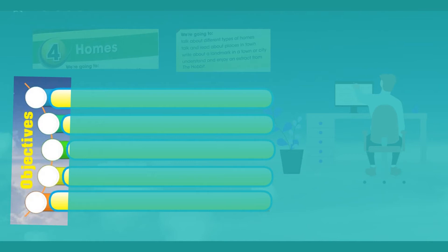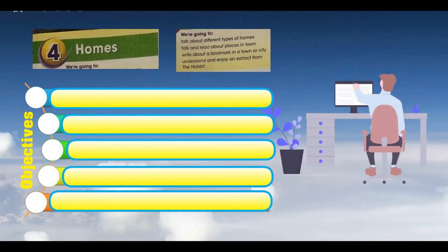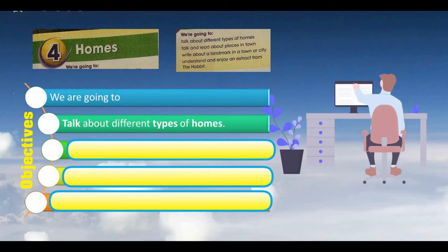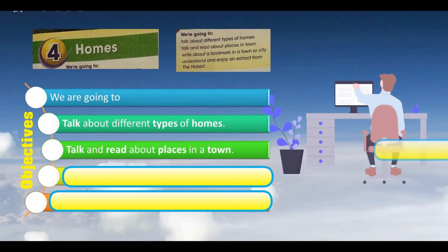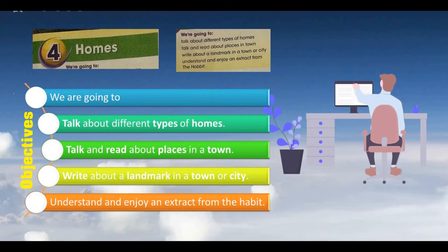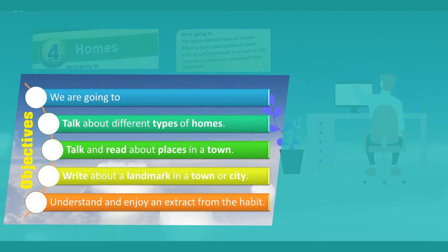Do you know what are the objectives of today's topic? Well, the objectives are: we are going to talk about different types of homes, talk and read about places in a town, write about a landmark in a town or city, and understand, enjoy, and extract from the habit. Great! So these are the objectives of today's topic.